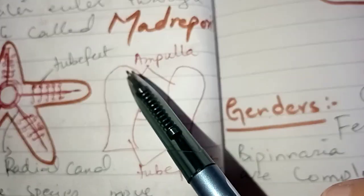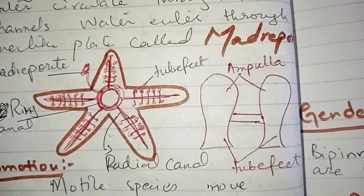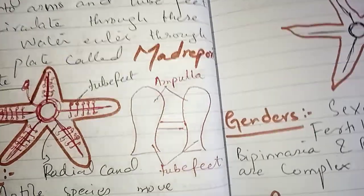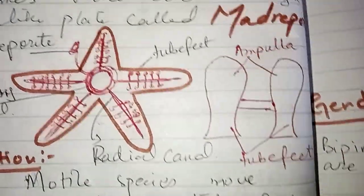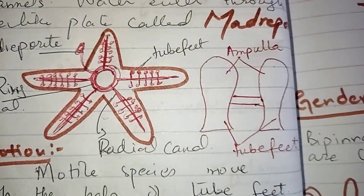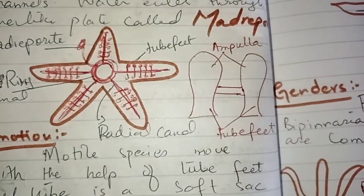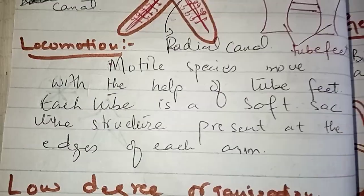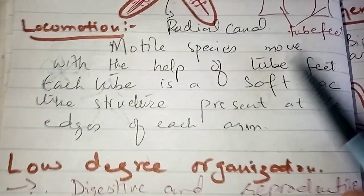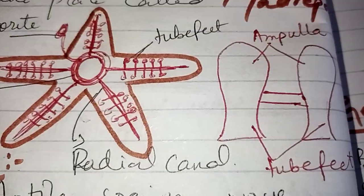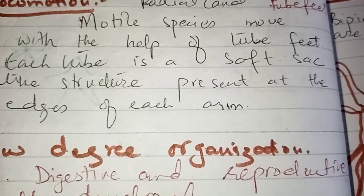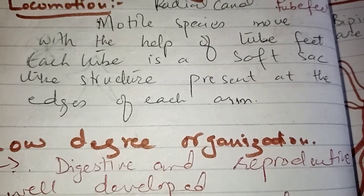Water fills up and when all the tube feet of the body contract, the water moves out from below through the tube feet — it works exactly like a suction pump. This is how starfish and other echinoderms attach to the substrate. When water comes down under pressure, the starfish moves upward — so the tube feet are also the organ of locomotion. Motile species move by means of tube feet, while other members are sessile. The tube feet are soft sac-like structures present at the edges of each arm.